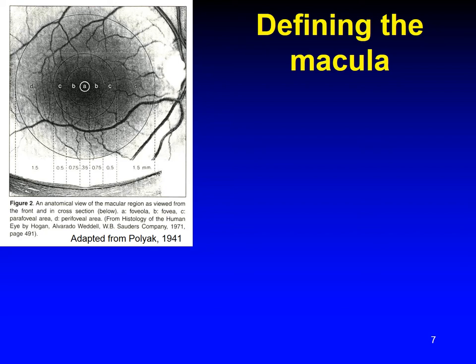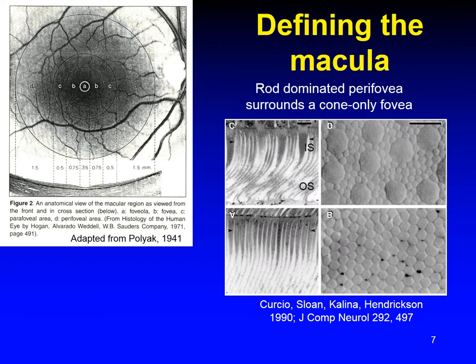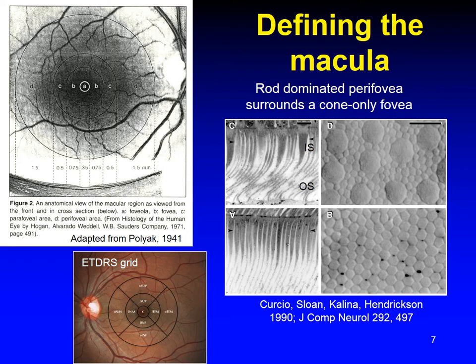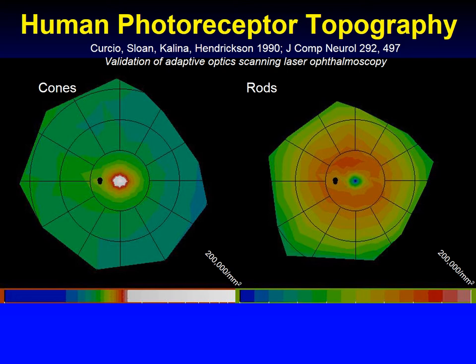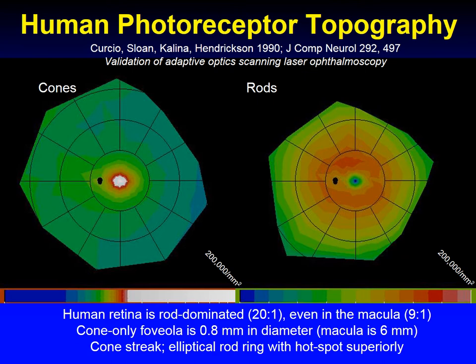Neurobiology defines the macula as an area with a continuous layer of ganglion cells in the inner retina. It is 6 millimeters in diameter and contains a cone-only fovea surrounded by a rod-dominated perifovea. We mapped the human retina using hole mounts to accurately represent photoreceptor topography over the entire retina. We learned that the human retina is rod-dominated, with a 20-to-1 rod-to-cone ratio, even in the macula where it is 9 to 1 in the young adult.